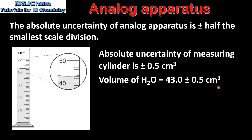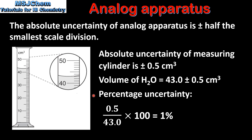And if we calculate the percentage uncertainty, we divide the absolute uncertainty of the measuring cylinder by the recorded measurement and then we multiply by 100. This gives us a percentage uncertainty of 1 percent.